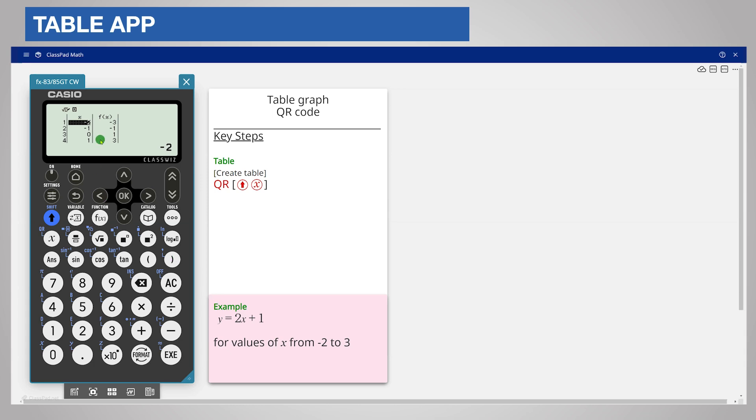With your table of values displayed, press the QR key which is shift X, scan the QR code, and then go to the link.